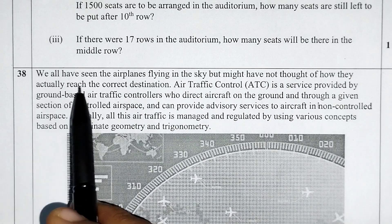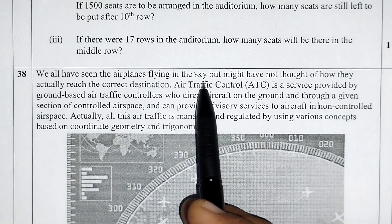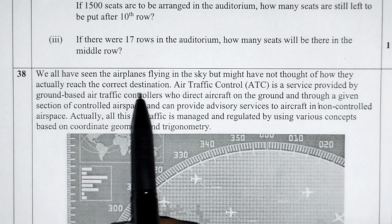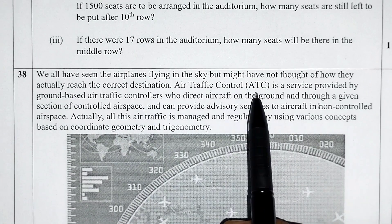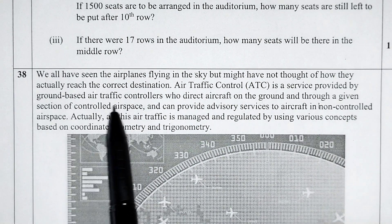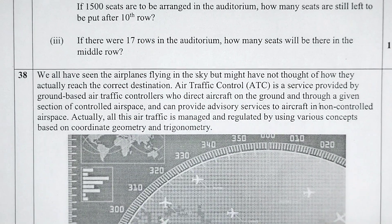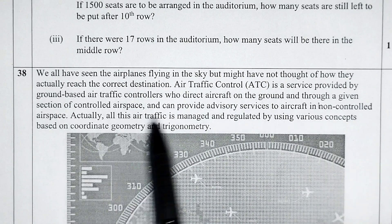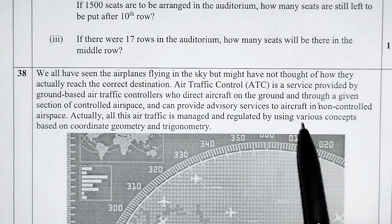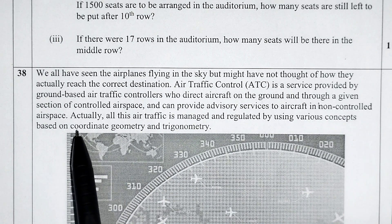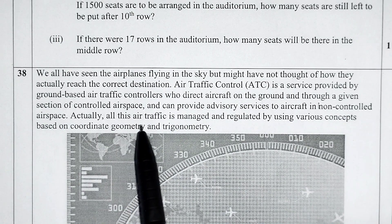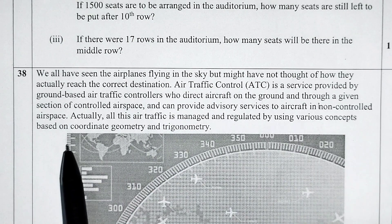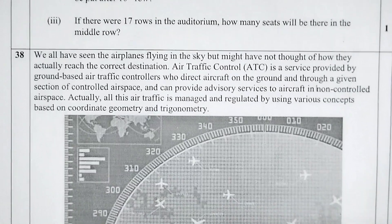Question 38. We all have seen aeroplanes flying in the sky but might not have thought about how they actually reach the correct destination. Air Traffic Control (ATC) is a service provided by ground-based air traffic controllers who direct aircraft on the ground and through controlled airspace. All this air traffic is managed using concepts based on coordinate geometry and trigonometry.